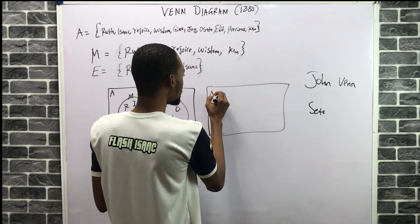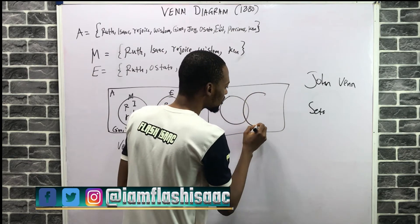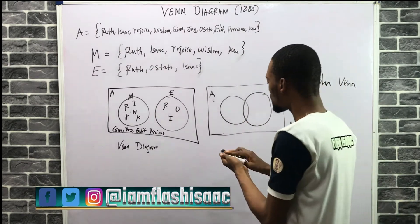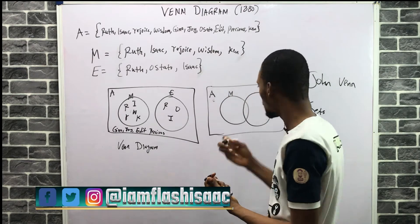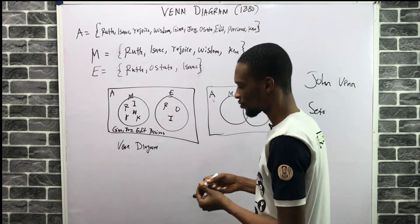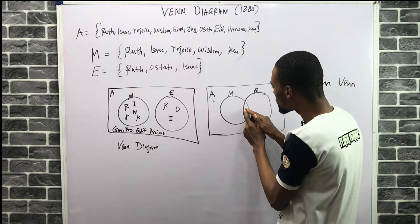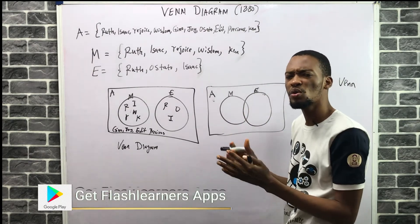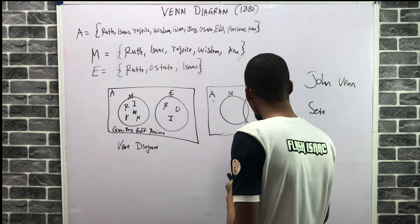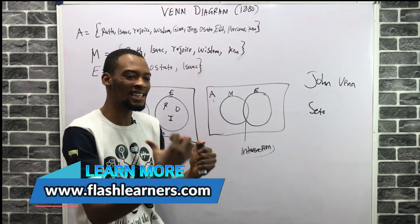In that case, the diagram becomes: A is the universal set with all the values. You draw something like this — this is the Venn diagram. Let this be M for mathematics and this be E for English. This middle place represents those who love both of them — that is the intersection. Intersection is a set term used for what two sets have in common.